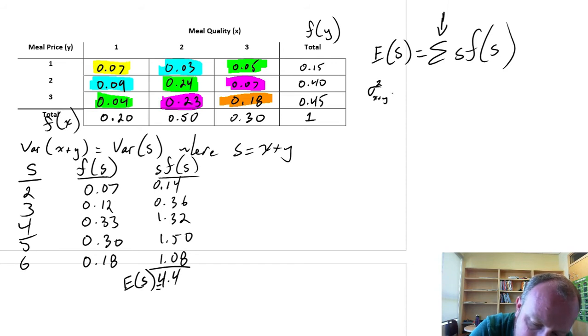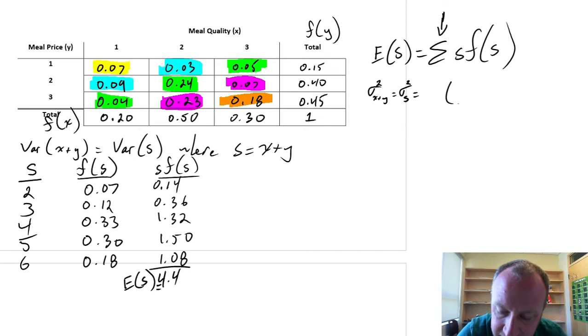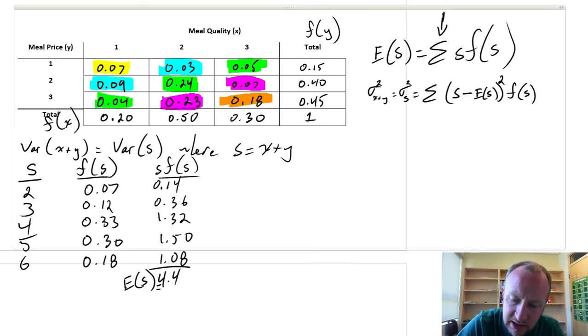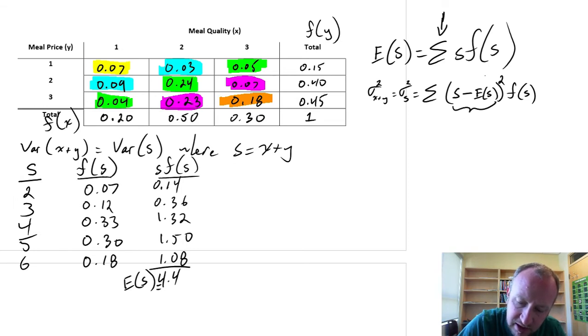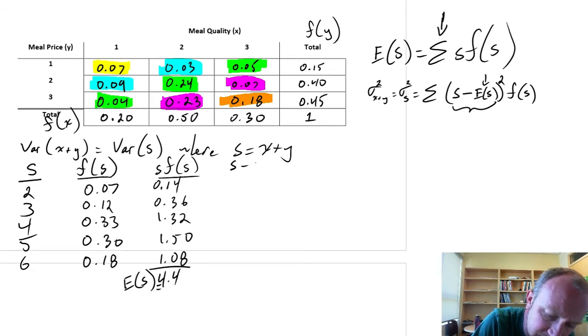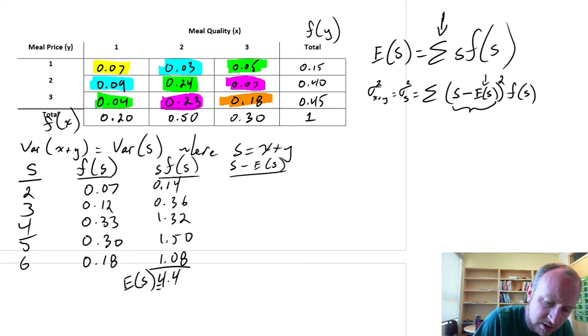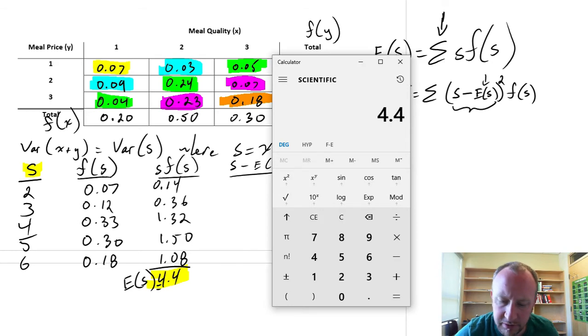Because now, we're going to be calculating this variance. This is x plus y, which is our variance of s. And the formula again, it's the same. The letters are different, but the nature of the calculations don't change. This is the difference between specific values of s minus the expected value of s squared, multiplied by the relevant frequency, and add it all together. So our next step here, we'll calculate these differences. We already have our expected value.